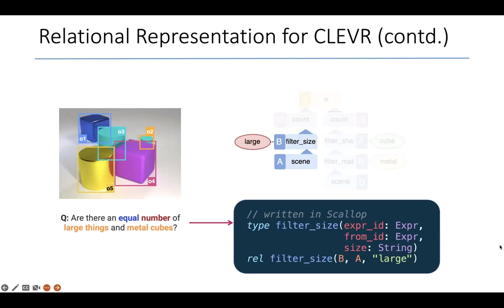Let's go a bit further. Here's another relation which is capturing another kind of AST node, which is a ternary relation called filter size. It has three columns. The first column is the expression ID, which is something like B. The second column talks about the child of this expression, which is A. The third column talks about an attribute of the expression I'm looking at, which is B, and one attribute it has is large.